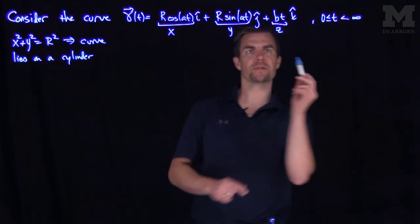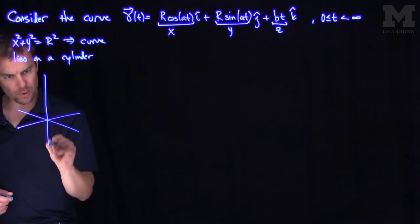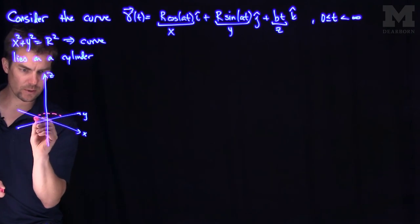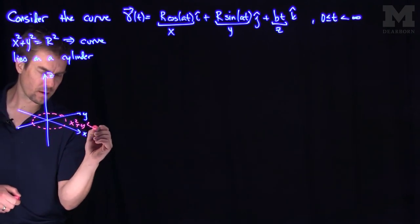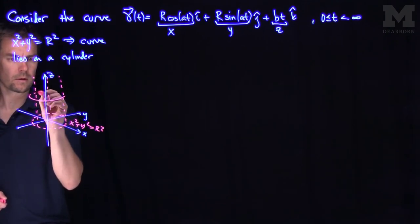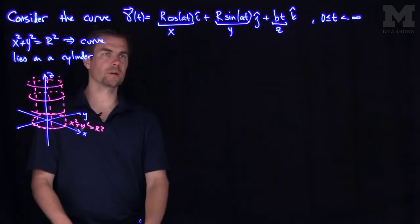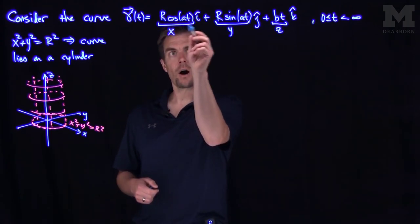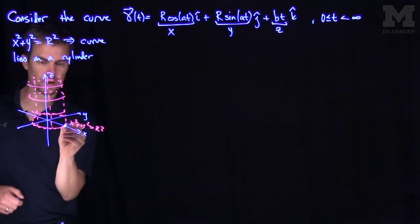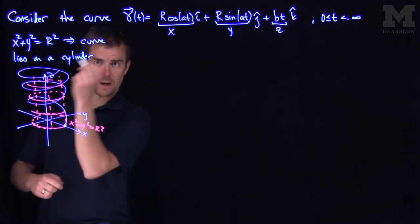As t increases, the z component increases. So the shape we get is a circle of radius r in the xy plane. There's the x-axis, the y-axis, and the z-axis. If we draw this cylinder — x squared plus y squared equals r squared — and extend it up, we know that our curve lies in this cylinder.